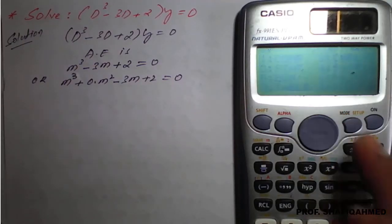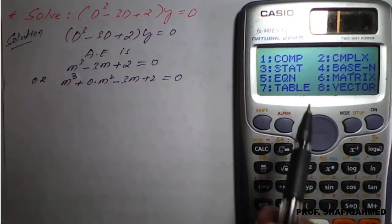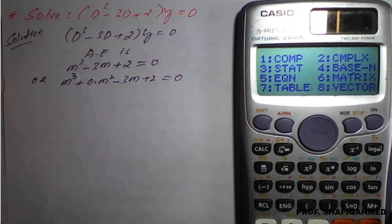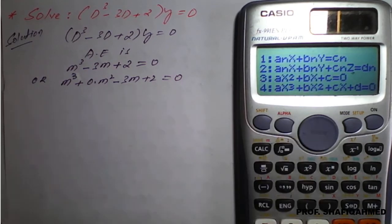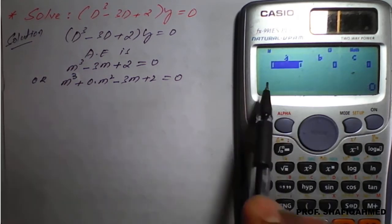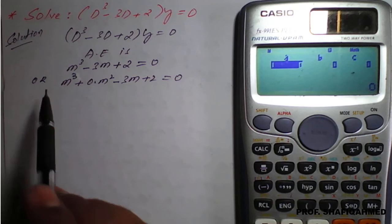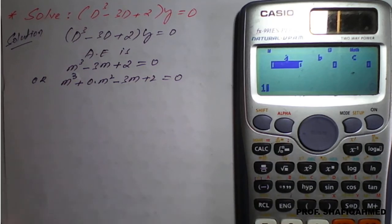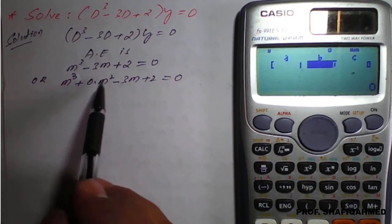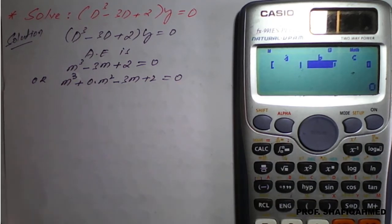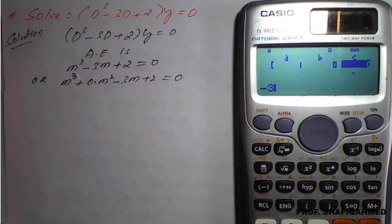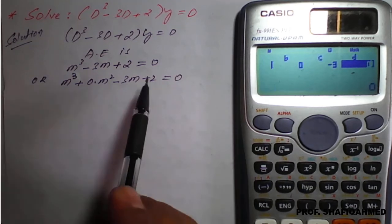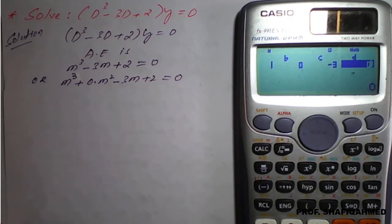Now go to mode option, then option 5, then cubic equation option 4. Enter the coefficients: coefficient of m³ is 1, coefficient of m² is 0, coefficient of m is -3, and the constant is 2.